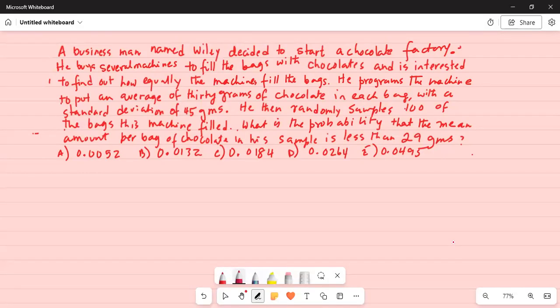He then randomly samples 100 of the bags this machine filled. What is the probability that the mean amount per bag of chocolate in each sample is less than 29 grams? So we are interested to find out the probability that the mean amount per bag is less than 29 grams.